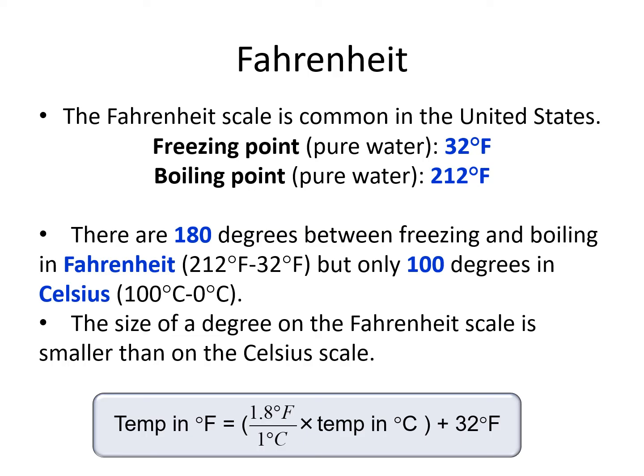The conversion between Celsius and Fahrenheit accounts for the different size of the degree by multiplying by 1.8 degrees Fahrenheit over 1 degree Celsius, which is the same ratio as 180 degrees Fahrenheit over 100 degrees Celsius. Another way that you might see that ratio expressed is 9 fifths, but it's still that same 180 over 100 ratio. The conversion also has to account for the different starting positions of the scales — the freezing point of water on the Fahrenheit scale is 32, but on the Celsius scale it is 0. It accounts for this difference with a plus 32 degrees Fahrenheit at the end of the formula.